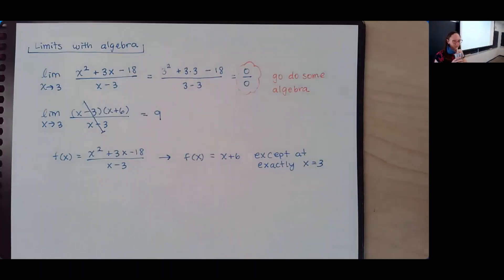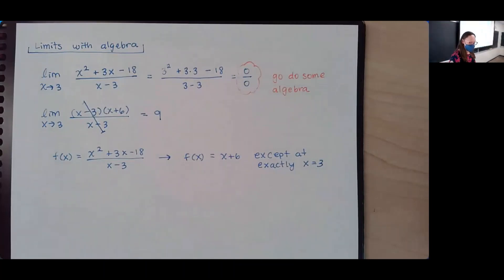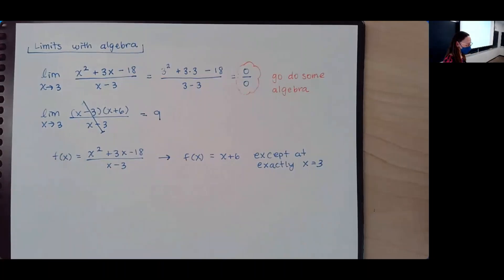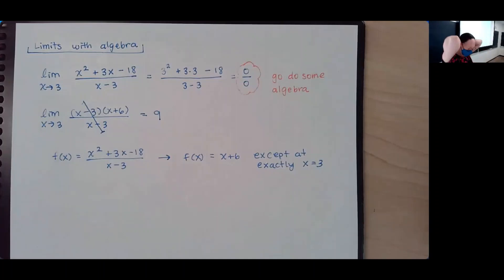Student question: In another class, we were talking about how if you have something similar to this, you divide both by the smallest degree polynomial — is that what this is? Essentially, my guess is you were looking at limits as x approaches infinity, not a number. If we were looking at x approaches a number, you could think about it as dividing by the polynomial x minus 3. But I think you were doing limits to infinity — where, say, you had x cubed plus something on top and x squared on the bottom, then you'd only divide by x squared.